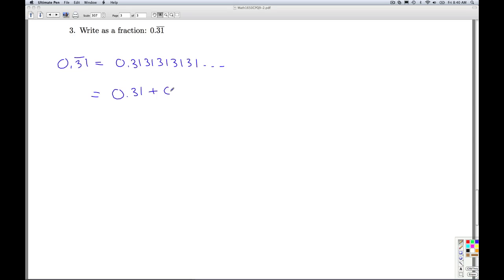0.31 plus 0.0031 plus 0.000031 on down the line. And so what we have is a geometric sequence. And the way we're going from one to the next is we're multiplying by 1 over 100. We're inserting two decimal places there, two zeros. That means we're dividing by 100, so multiplying by 1 over 100. And this is going on forever.